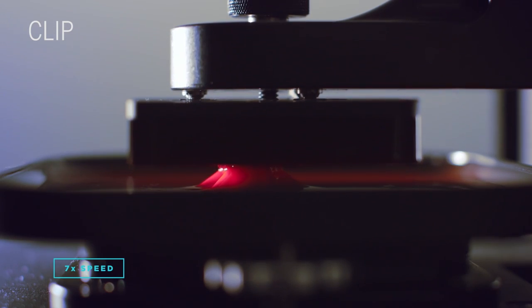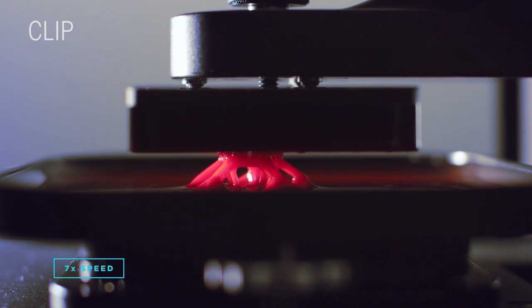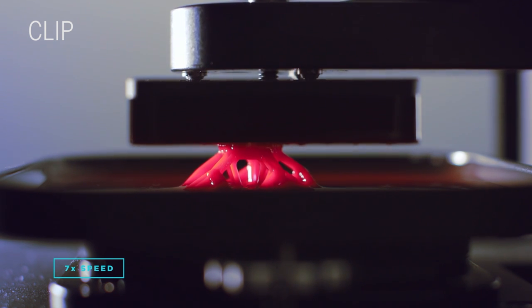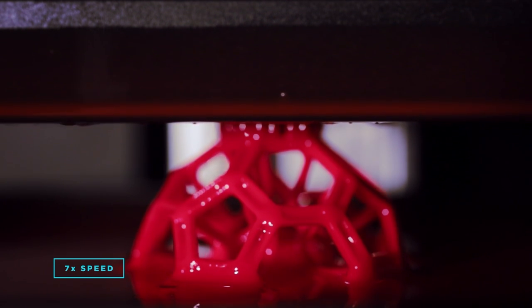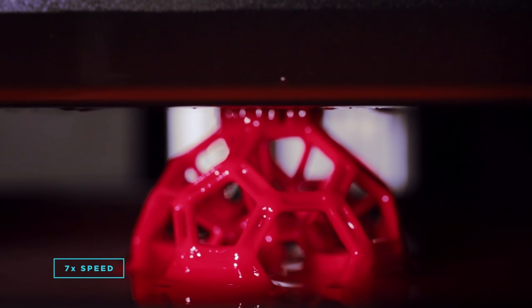Other printers put down one solid layer at a time in a lengthy mechanical process. CLIP works by projecting a series of ultraviolet images through a special window located below a bath of liquid resin.